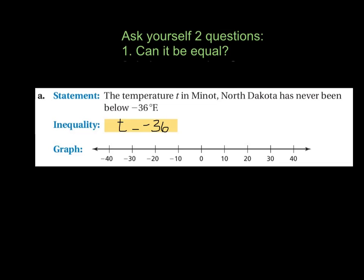So if it's never been below that, then it has to have been, this is that second question, greater than, more than that. It's never been below it, it must be greater than. So we have the inequality, T is greater than or equal to negative 36.